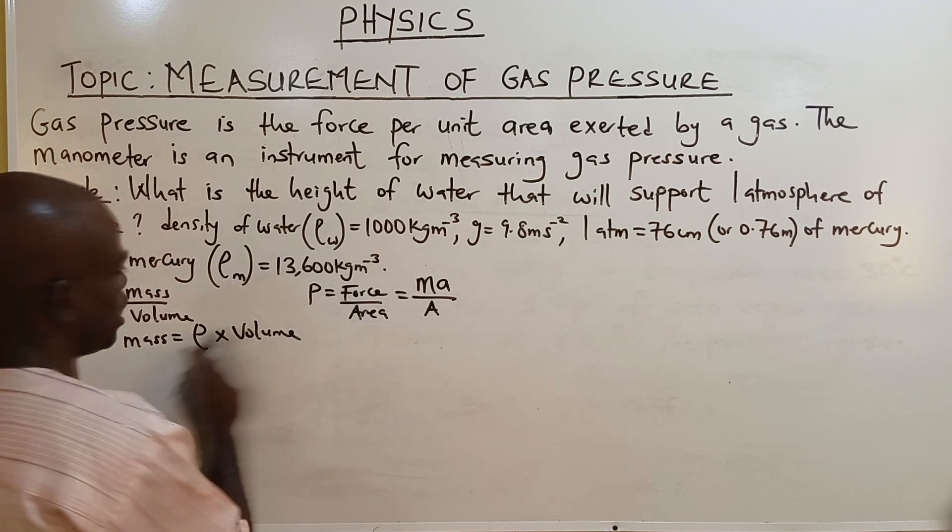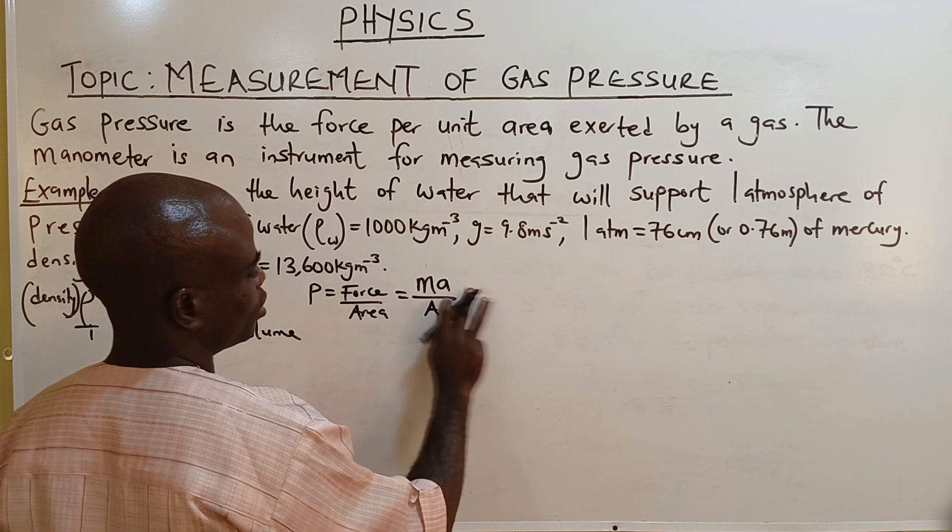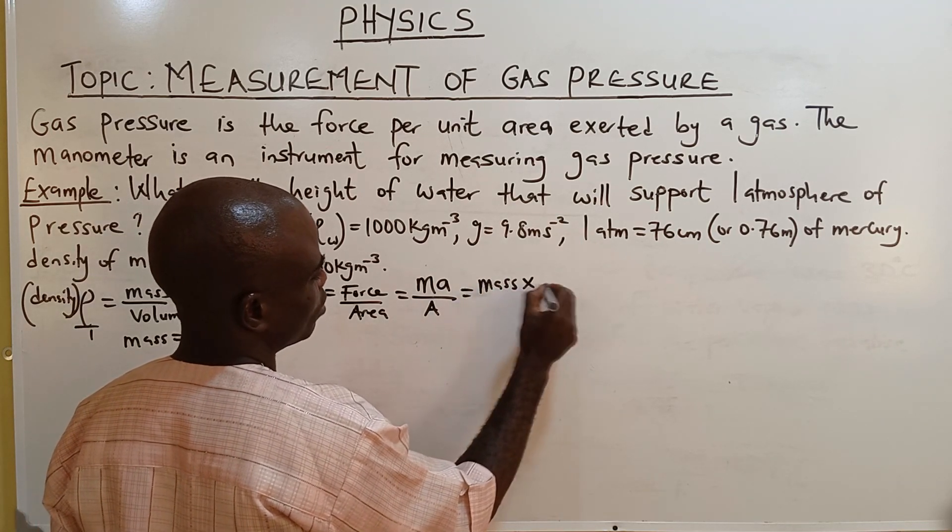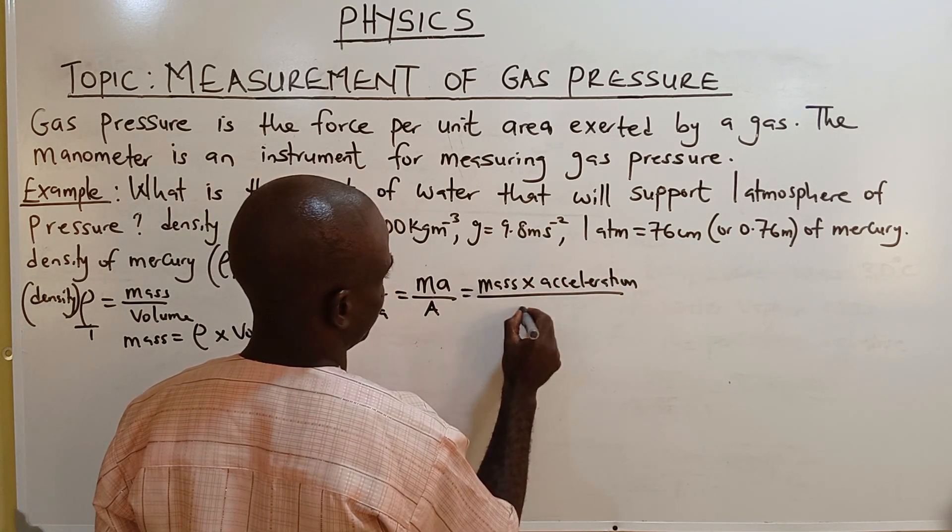Now from here, instead of writing mass, you replace your mass M. Let me write it so that you understand what it means. Mass times acceleration over area.